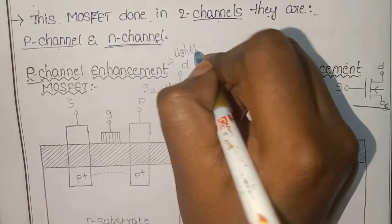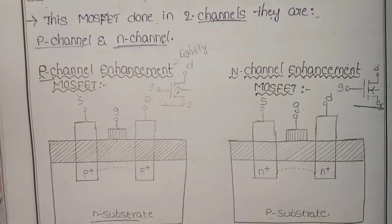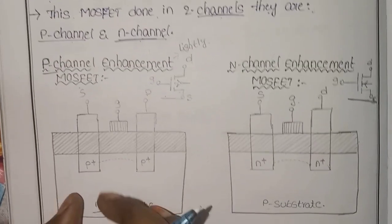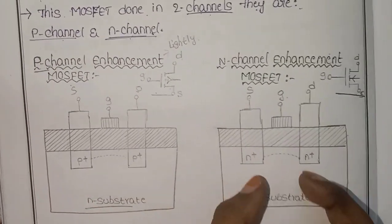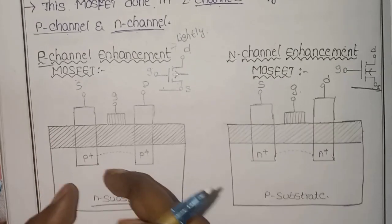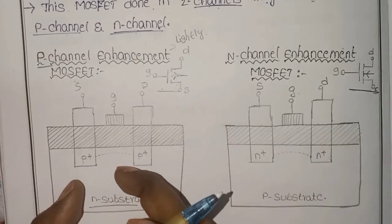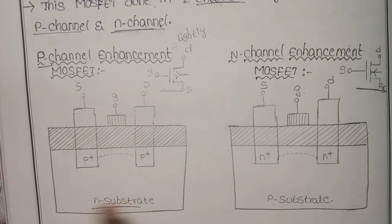Lightly doping is used in the construction. This applies to both P-channel and N-channel. The source and drain terminals are lightly doped, and the N-substrate is used.